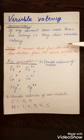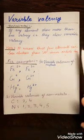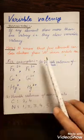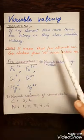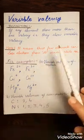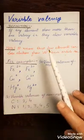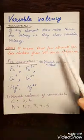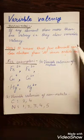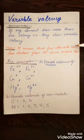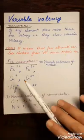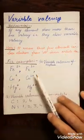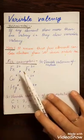Why do elements show variable valency? Because a few elements lose electrons not only from the outer valence shell but also from the inner orbits. This loss from inner shells is the reason for variable valency. For example, iron shows variable valency as Fe²⁺ and Fe³⁺.